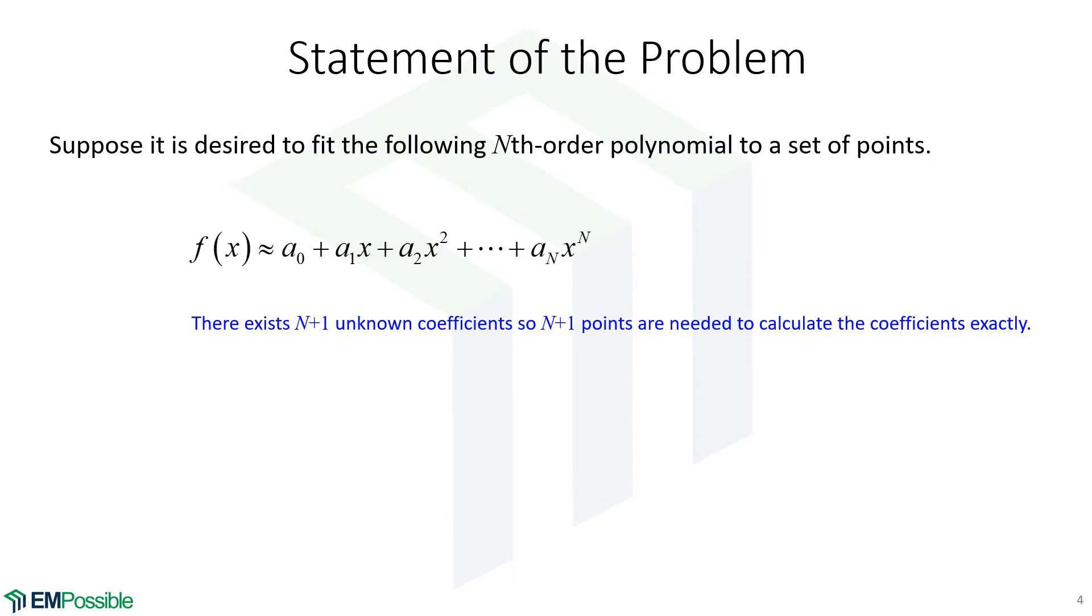Fitting polynomials. So let's say we have an nth order polynomial. So the highest power of x is n. Now let's count the number of coefficients it takes to do this curve fit. We have one, two, three, four, all the way up to n, but we also have this a sub zero. So we have actually n plus one coefficients to find. So in order to fit an nth polynomial to a set of measured data, we need n plus one points to calculate them exactly.